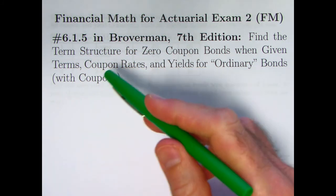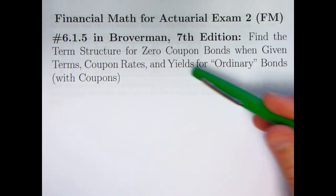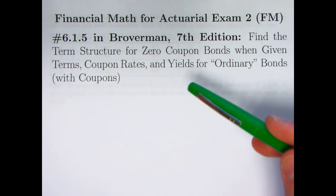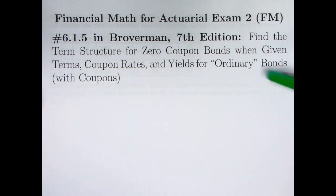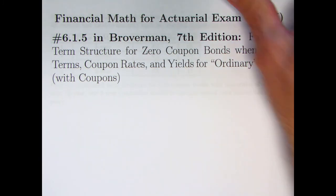In this video we're doing problem 6.1.5. We'll be finding the term structure for zero coupon bonds when we're given terms, coupon rates, and yields for what you might call ordinary bonds that actually have coupons. This is kind of the opposite of what we've done in the last couple videos where we were given the term structure and wanted to think about valuing the bonds. Now we have to actually find the term structure, so it's the opposite problem.